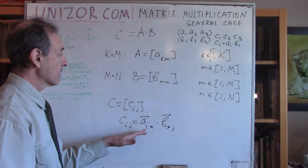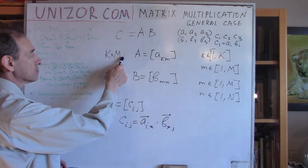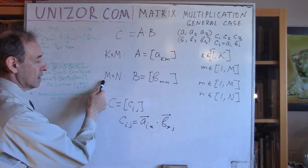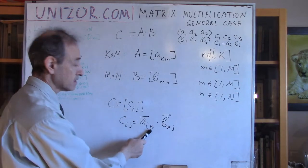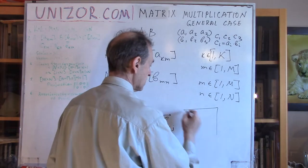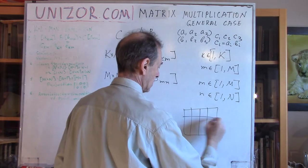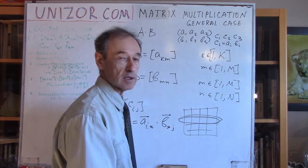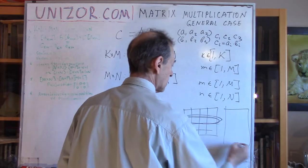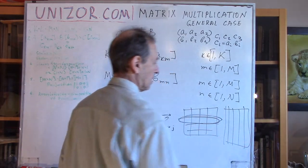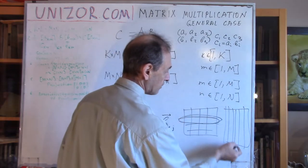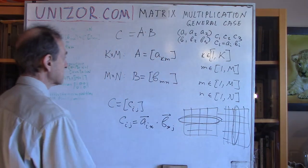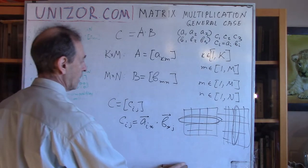This is the reason why the number of columns in matrix A must equal the number of rows in B — because the number of columns in A is exactly the dimension of the row vector. If A is a matrix, each row vector has dimension equal to the number of columns. In the case of B, where I use column vectors, the dimension of any column vector equals the number of rows. That's why they're supposed to be the same, and that's why I use the same letter M for both.